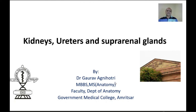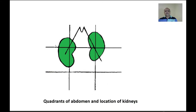Hello students, today we are going to talk about the kidneys, the ureters, and the suprarenal glands — a very important topic from the examination point of view. The kidneys are located in different quadrants of the abdomen. Here we see the nine quadrants: the right and left lateral planes, the plane at the level of L1 vertebra, and the plane at the level of L5 vertebra. This box represents the epigastrium, these two are the right and left hypochondrium, these are the two lumbar regions, this is the umbilical region, the right and left iliac fossae, and this is the hypogastrium.